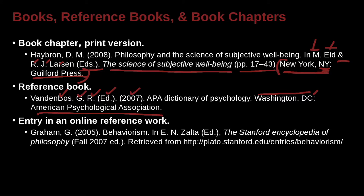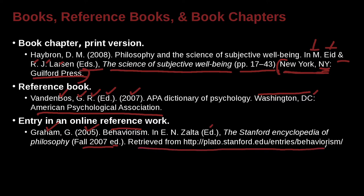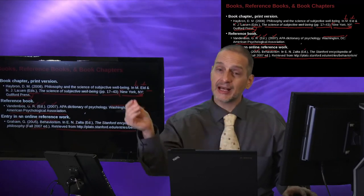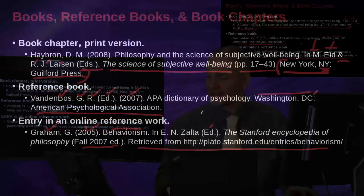How about some information that's online but not really an article by one person — again some kind of collection? Here we have an example where Graham is the author, published in 2005. 'Behaviorism' is the title. It's inside something edited by E.N. Zolta, editor, and that container is called the Stanford Encyclopedia of Philosophy, which has a date of 2007, with the edition abbreviated as 'Ed.' as APA defines it, and it was retrieved from its URL. That's an online source written by somebody, contained inside another larger work.